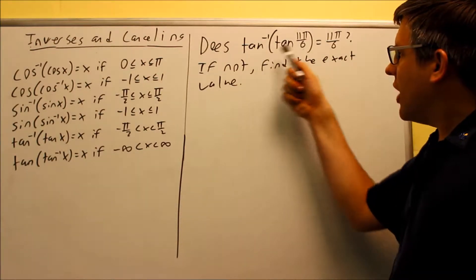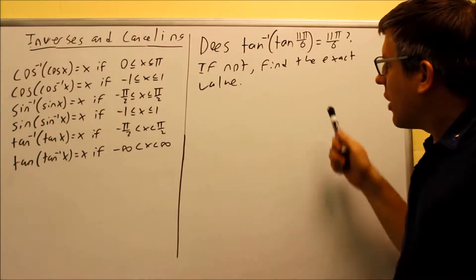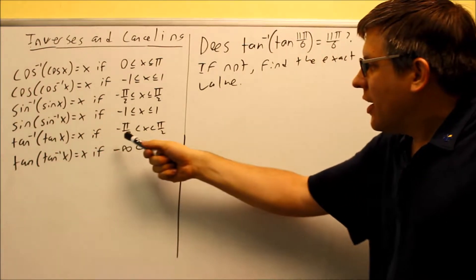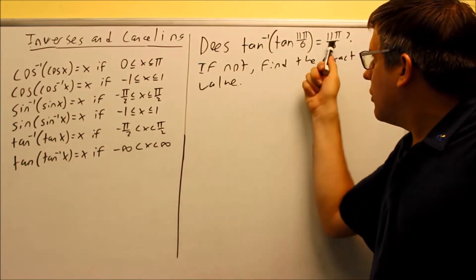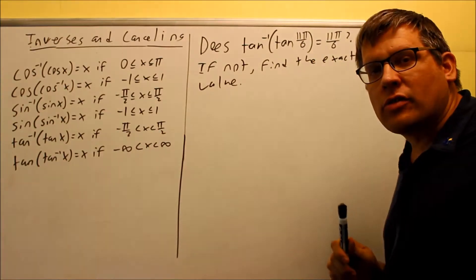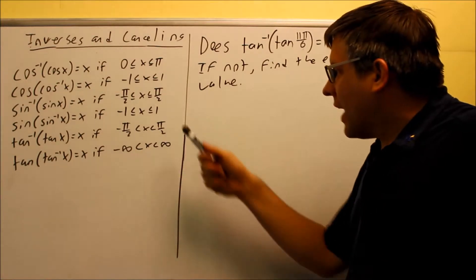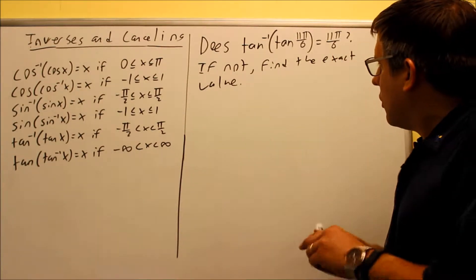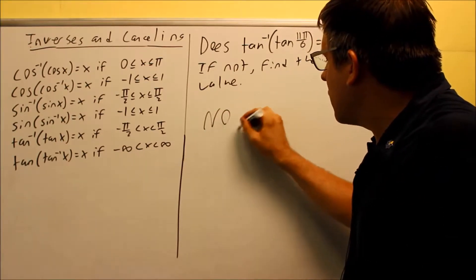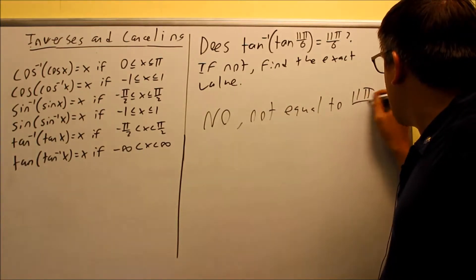Does inverse tan of tan of 11π/6 equal 11π/6? For inverse tangent of tangent, this is true only if the angle 11π/6 is between -π/2 and π/2. Well, 11π/6 is definitely more than a half, so no — it does not equal 11π/6.